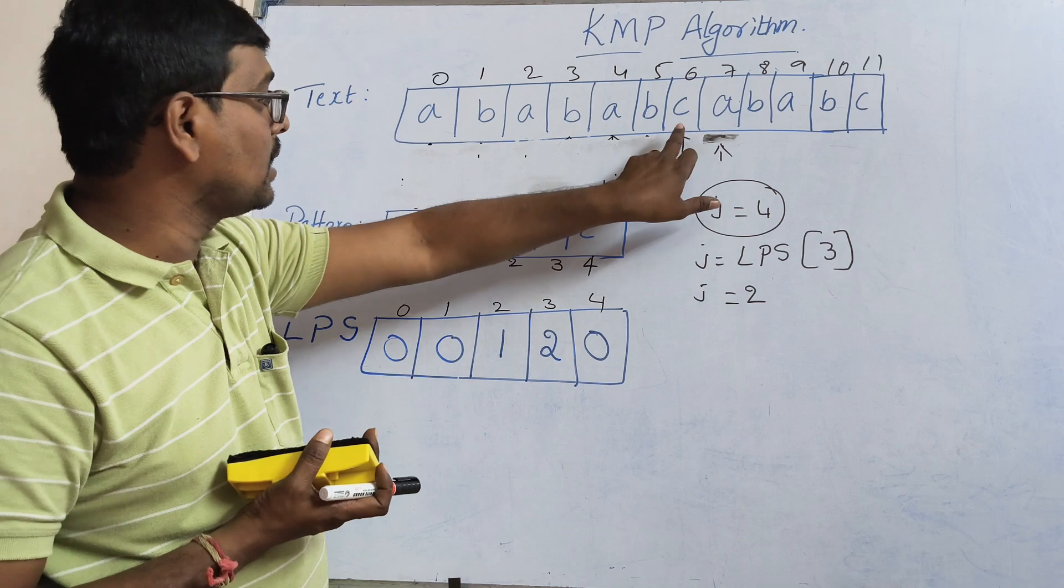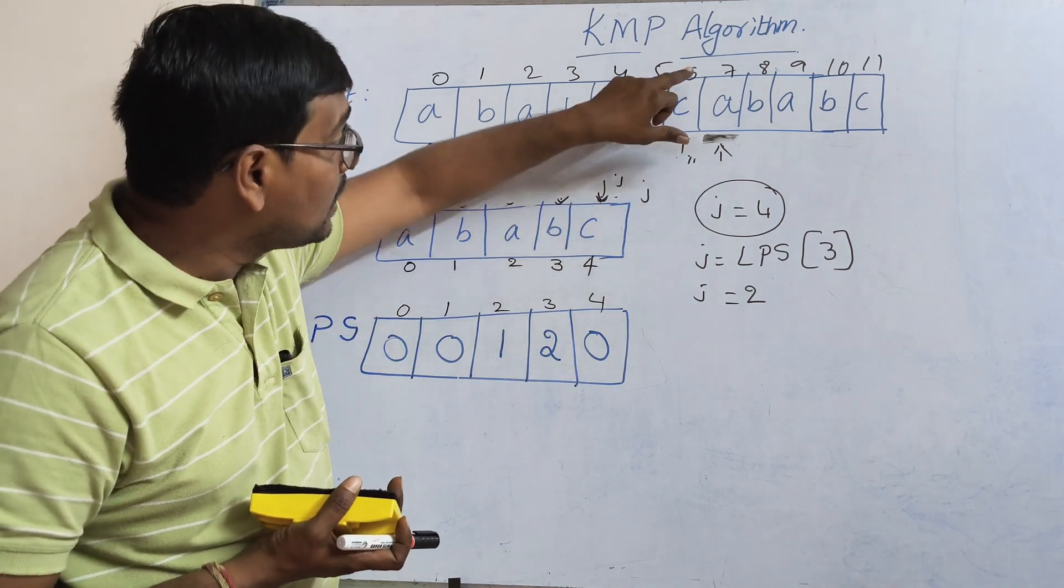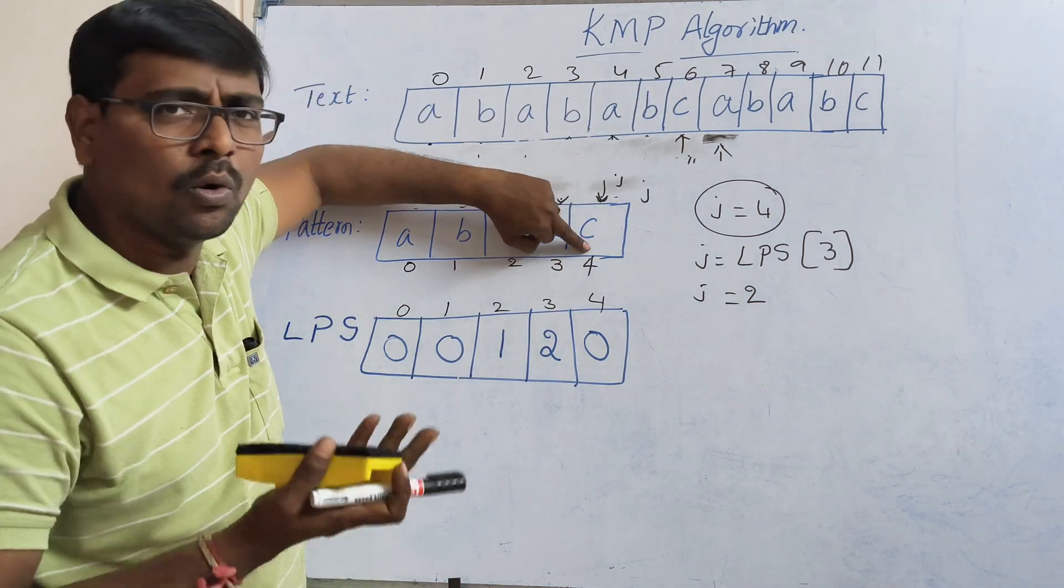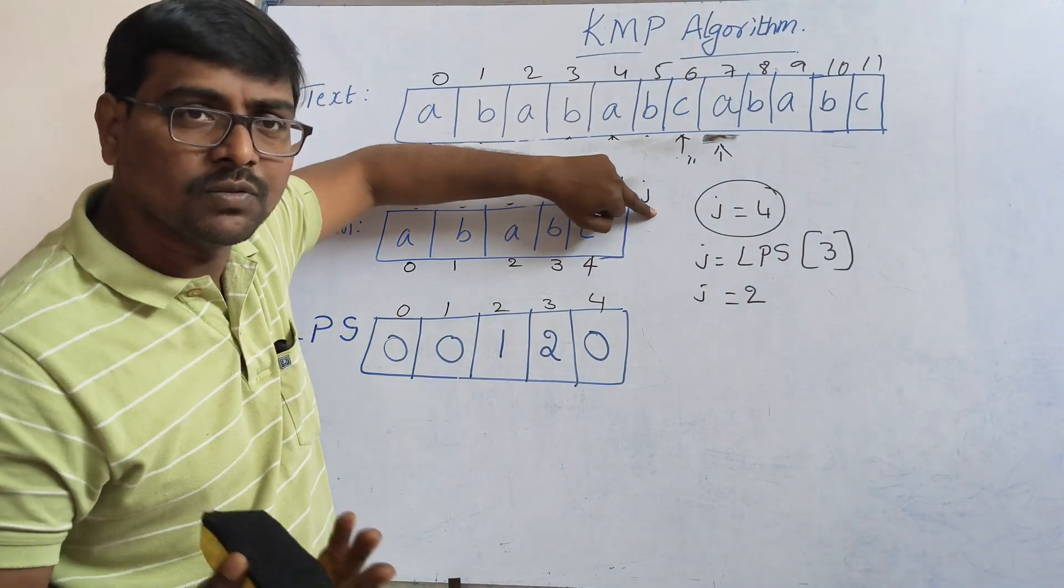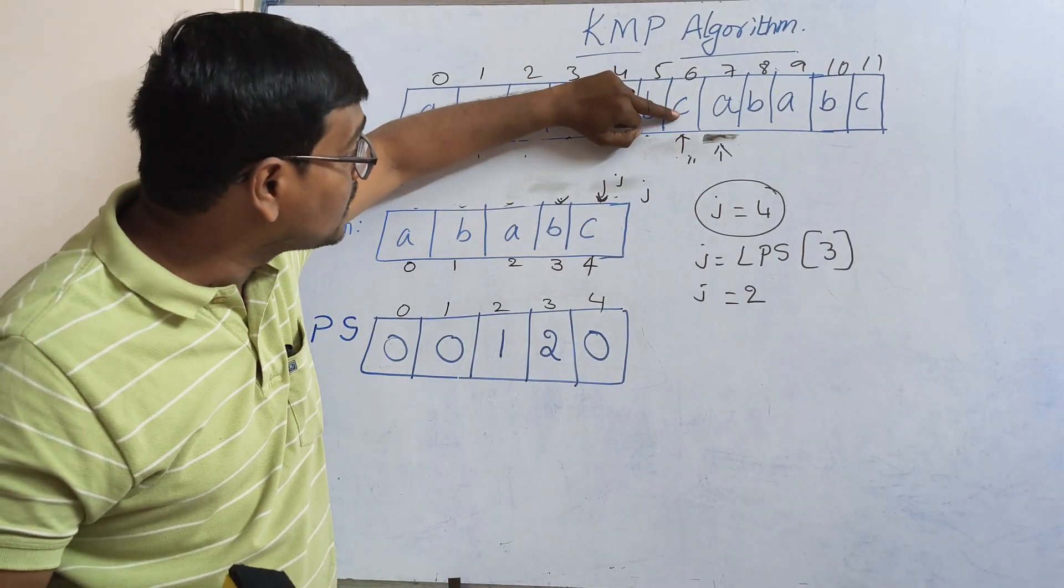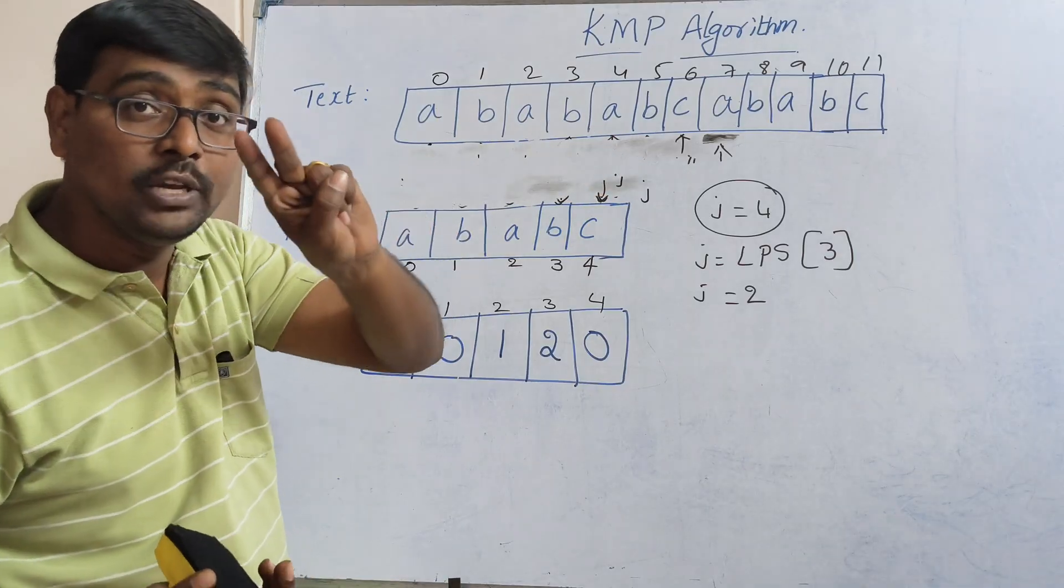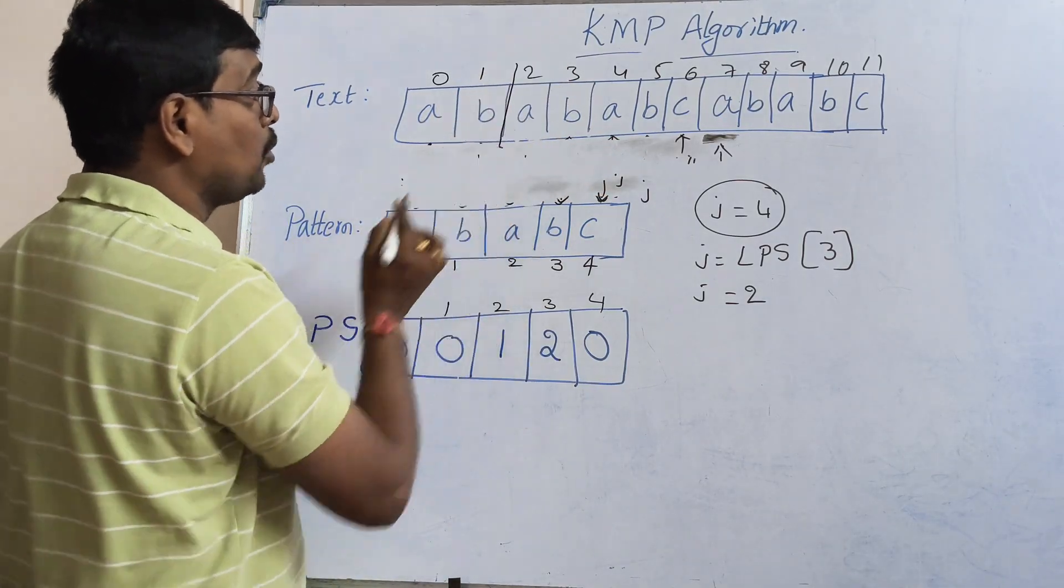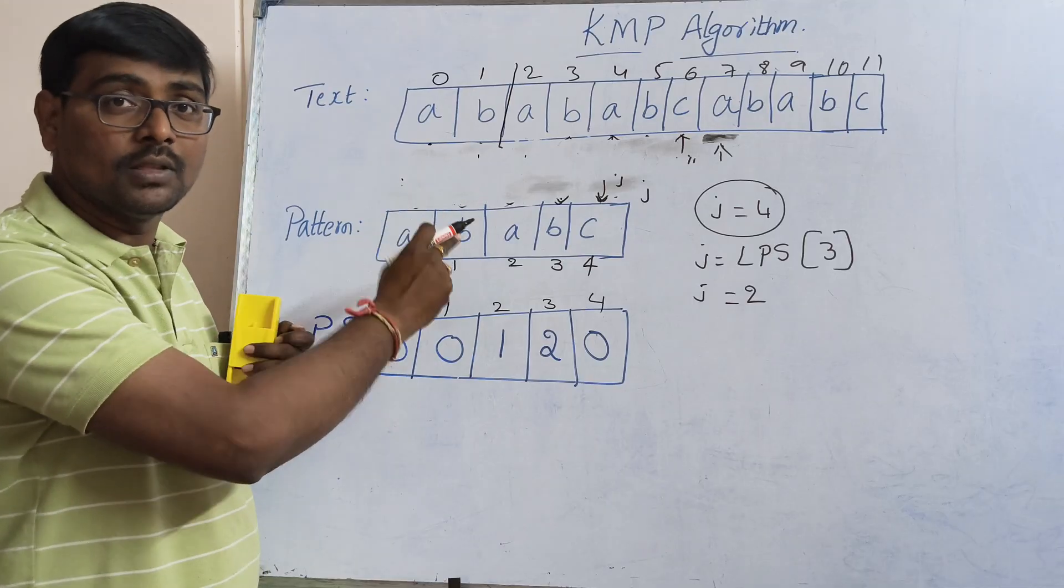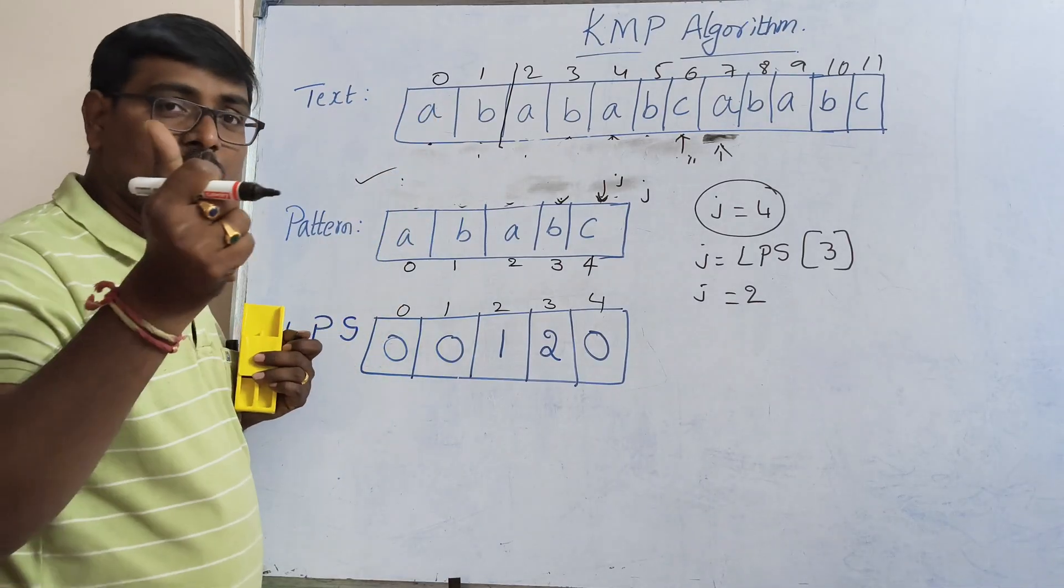In which position is my pattern available? It is a very simple concept. Simply 6 minus 4, or else if you want to increment, 7 minus 5 - whatever it is, i minus j. The value is 2, so my pattern is available from position 2, right? This is the concept of KMP algorithm.